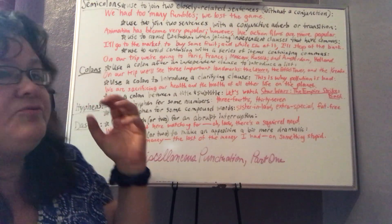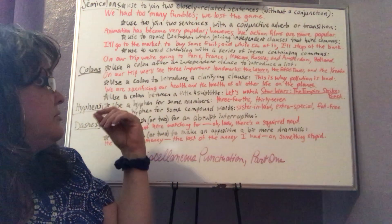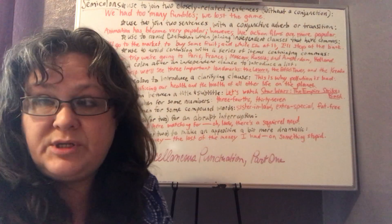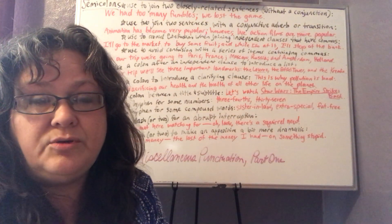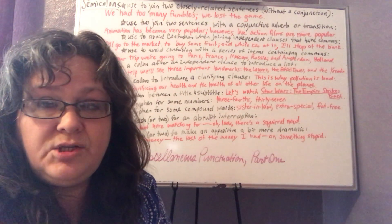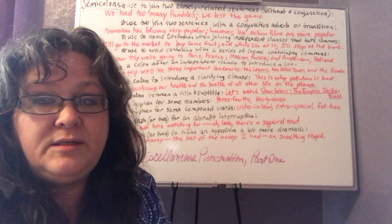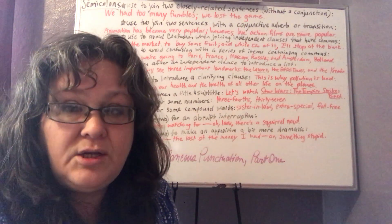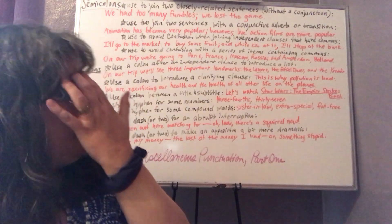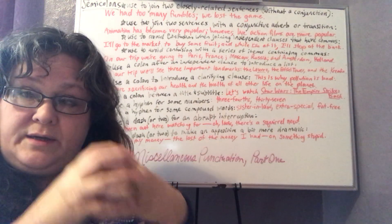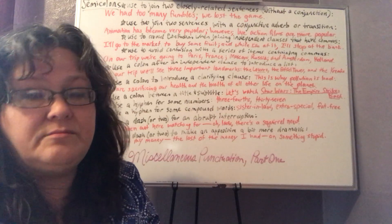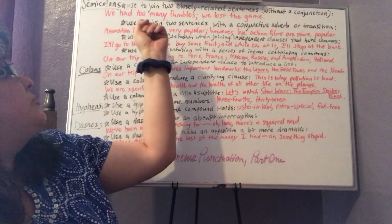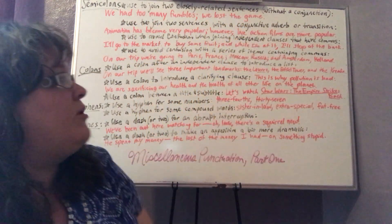Semicolons are used for several things and colons can be used for things that are quite similar. There are some times when it's open to interpretation which one to use, but one thing that they have in common is that each one of them comes after an independent clause. An independent clause again is something that can stand alone as a sentence. A semicolon is more like for joining independent clauses — that's more its flavor. A semicolon is used to join two closely related sentences without a conjunction.